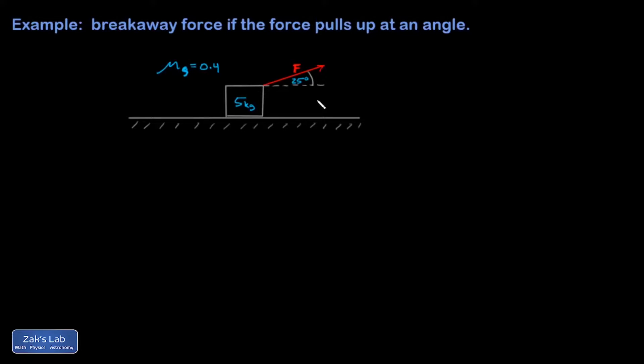In this example we're getting a breakaway force when we're pulling up at an angle on this box. This is a really important point: if you ever have an applied force that's tampering with the vertical direction, so there's a component of this vertical, it's going to change the normal force and that changes friction forces. So let's get into the force analysis.